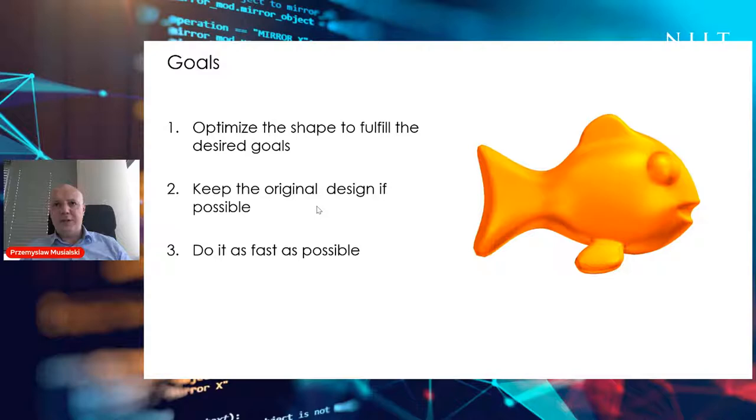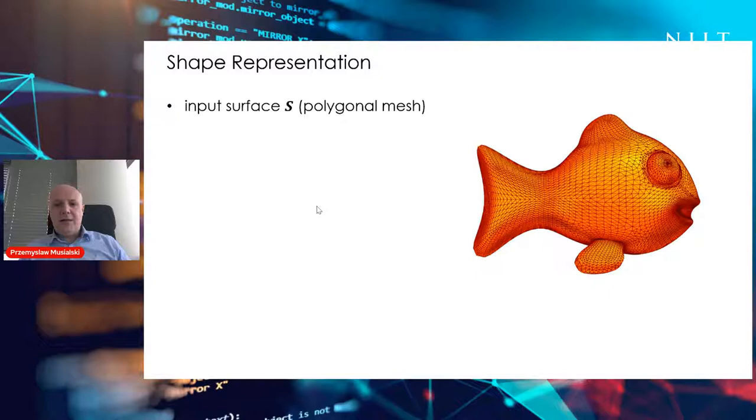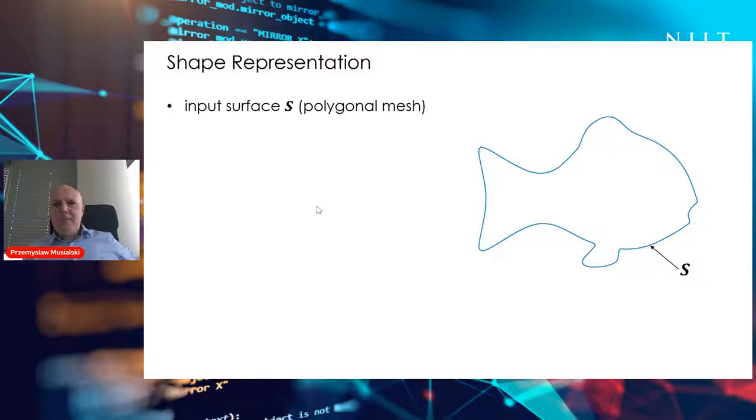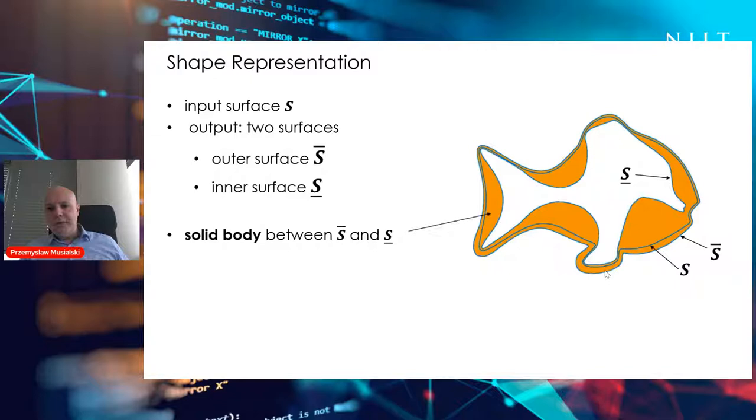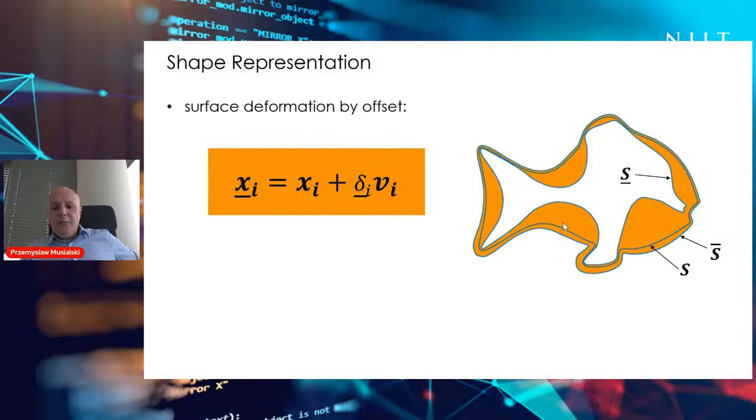We represent the shape as a polygonal mesh composed of polygons. In most cases, we just use triangles because they are very efficient. I will now look only at the cross sections or the silhouette. Let's call the surface of the object S. What we want to do now is create two other surfaces, S underlined and S overlined, which are offsets of the original surface.